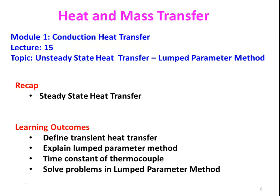In unsteady state heat transfer, the heat transfer with respect to temperature is varying — that is what defines unsteady state. In steady state, heat transfer is constant with respect to time, whereas in transient or unsteady state, it varies with respect to time. The learning outcomes: at the end of this lecture, the student will be able to define transient heat transfer, explain lumped parameter method, explain the time constant of the thermocouple, and solve problems in the lumped parameter method.